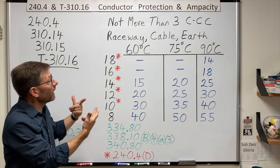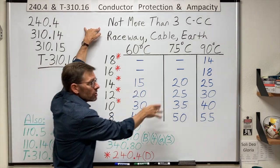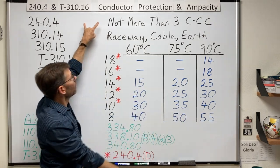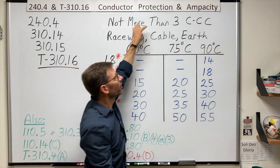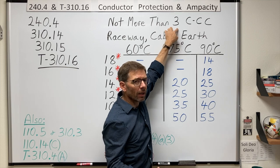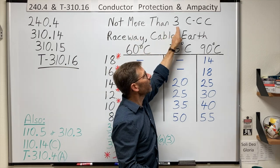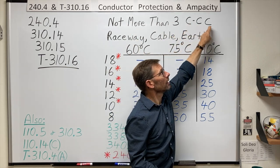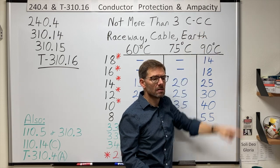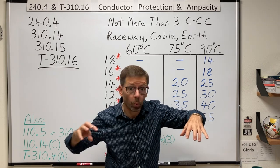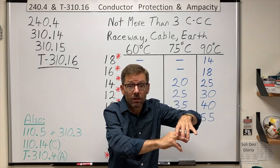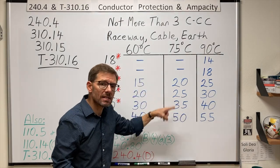Another thing I want to see in the title is that it says, use these ampacities for insulated conductors with not more than three, three what? Not more than three current carrying conductors. So, right away you go, Dave, many times I've had a conduit with way more than three conductors in it. Can I use these ampacities?